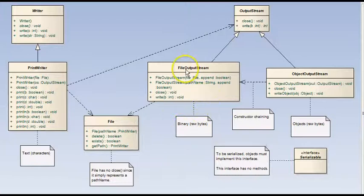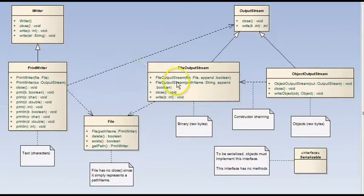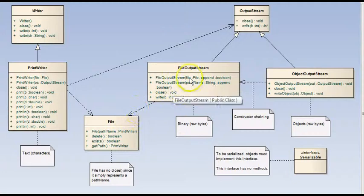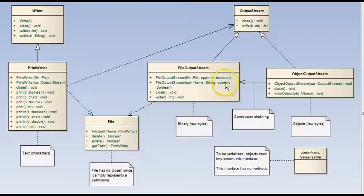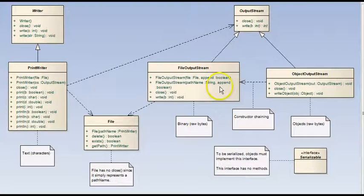For binary data, there's a FileOutputStream. For object data, there's an ObjectOutputStream. The constructors show that there's chaining involved. For example, the FileOutputStream can take a File in its constructor — and again, the file is a path name. Also, the FileOutputStream has another parameter in its constructors: a boolean called append. It tells whether or not, when you open a file with this constructor, you will write to it from the beginning of the file, overwriting whatever's there, or append to the end of the file.